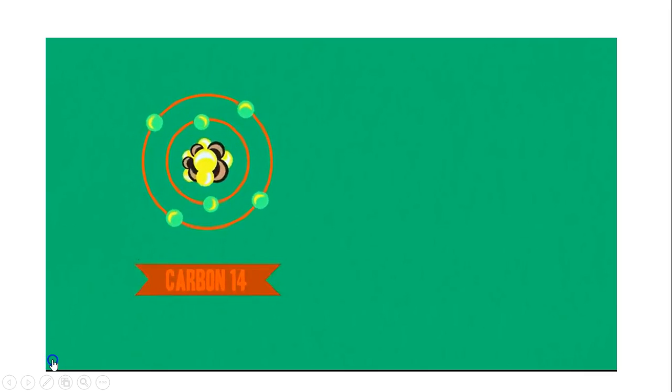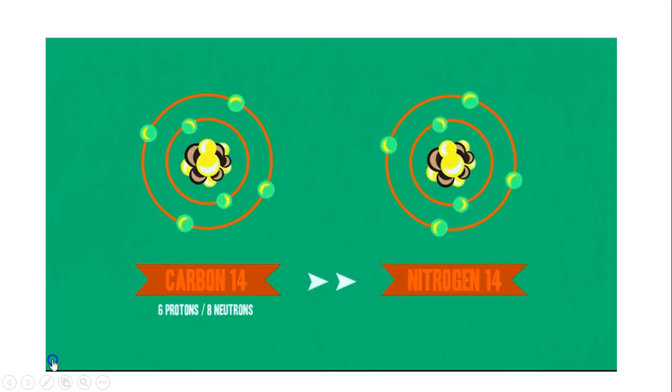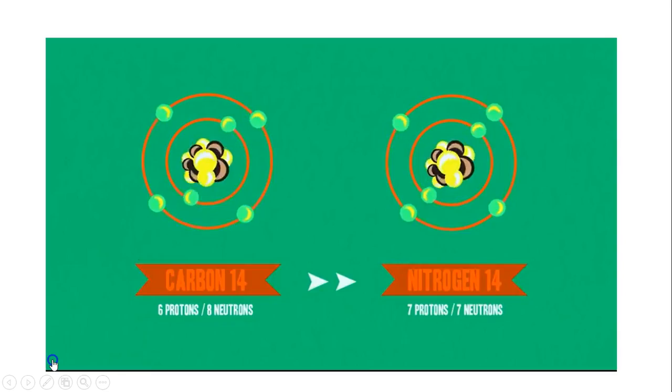If this was a carbon-14 atom with six protons and eight neutrons, through the weak force, it just decayed into a nitrogen-14 atom with seven protons and seven neutrons. And that actually happens. It happens all the time. And it's how carbon-14 dating works. So there it is. The weak force is actually able to change the identity of particles when they come very, very close to each other.